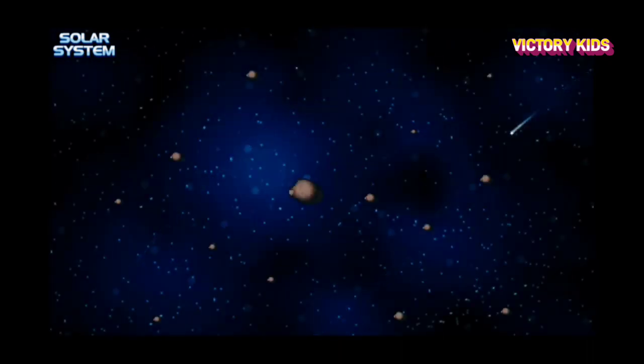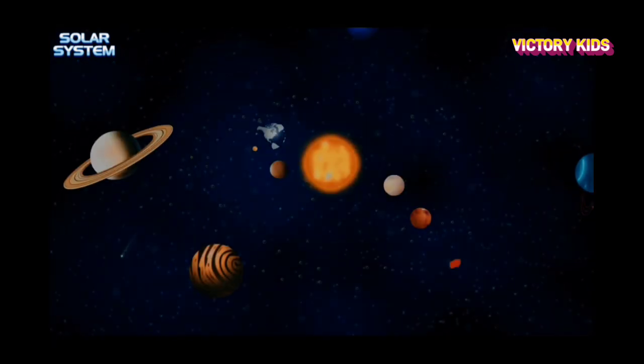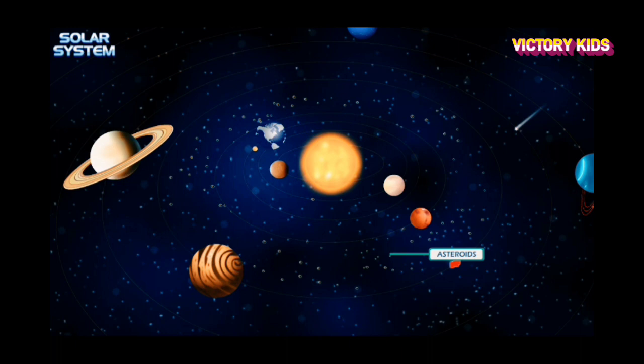There are some small rocky bodies in the solar system that have been left over from the formation of the planets. These are called asteroids. Asteroids don't have enough gravity to pull them into the shape of a ball. Most of them lie in between Mars and Jupiter.